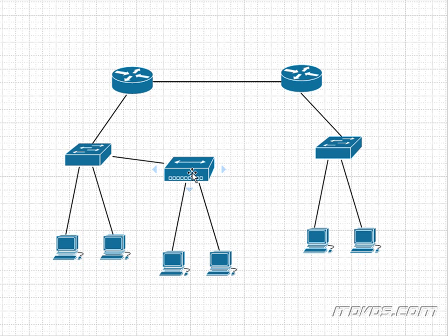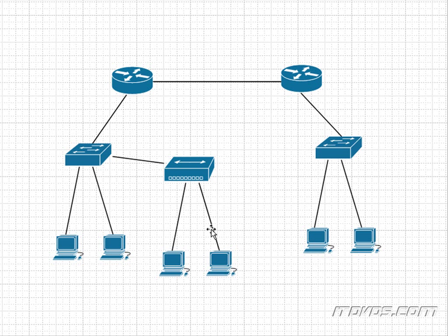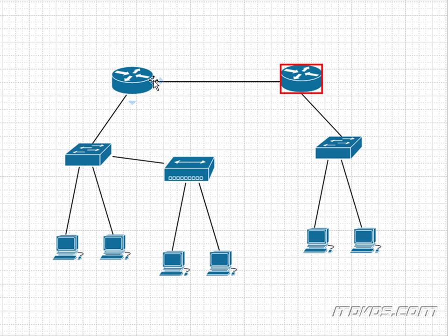Now let's add a hub to our diagram. Let's count out our collision domains. We have one, two, three — because this hub is going to a switch port on the switch, so that makes it another collision domain. But the computers connected to the hub are not new collision domains, because they're going to a hub and hubs don't break up collision domains. So: one, two, three, four, five — router to router — six, seven, and eight. Eight total collision domains.